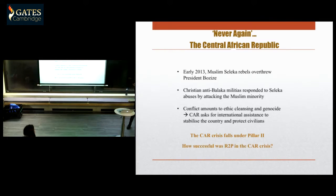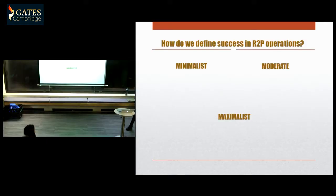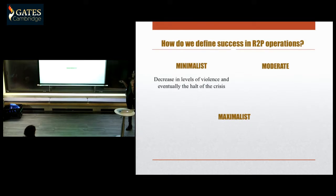So how do we assess the success of R2P implementation in the Central African Republic? There isn't really a straightforward answer to this. Based on literature on peacebuilding, I've tried to differentiate between different interpretations of success for R2P. In minimalist terms, R2P would be a success if we notice a decrease in levels of violence and eventually the halt of the crisis.